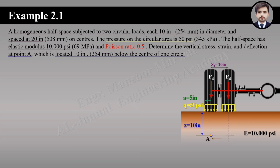We need to determine vertical stress, strain, and deflection at point A, located 10 inches below the center of one circle. Before going into the solution, the first step is to check the Poisson ratio. If the Poisson ratio is 0.5, you have to use the charts. If it is other than 0.5 — whether 0.45, 0.55, or 0.6 — you have to use the equations.